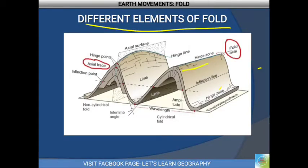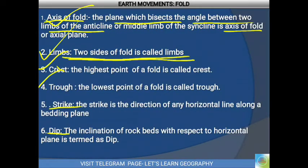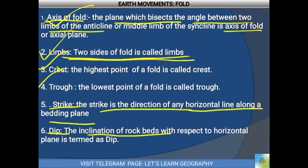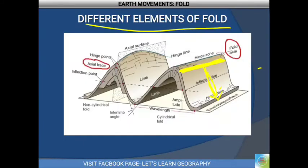Now we will discuss dip and strike. Strike is the direction of any horizontal line along the bedding plane. Dip is the inclination of the bedrock with respect to the horizontal plane — the angle of inclination of the bedrock along the horizontal plane is called the dip.